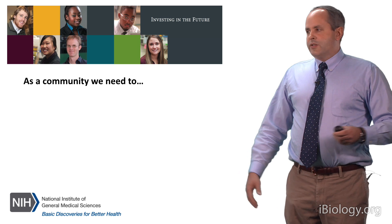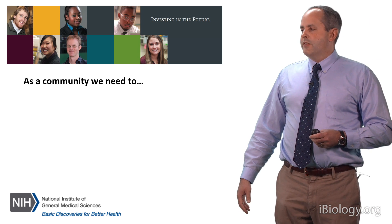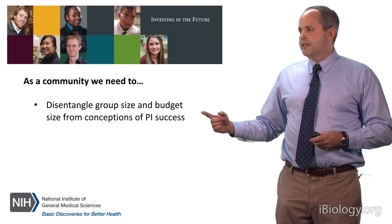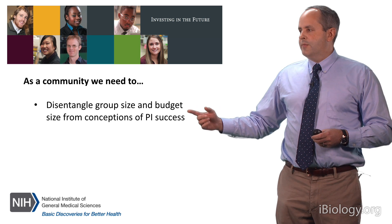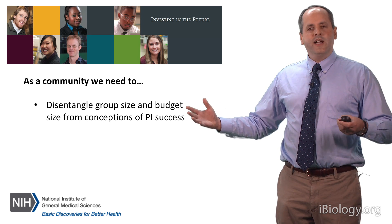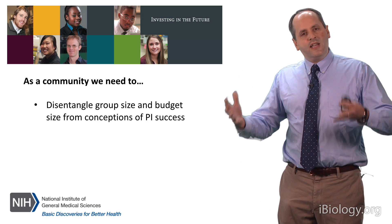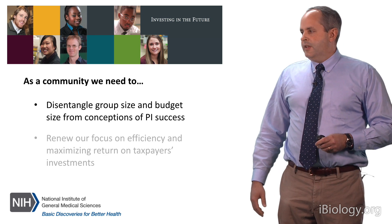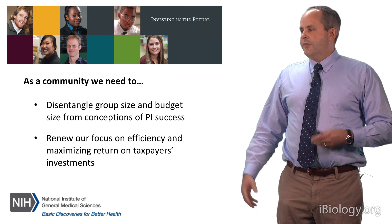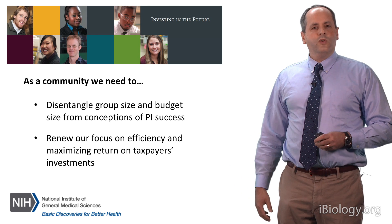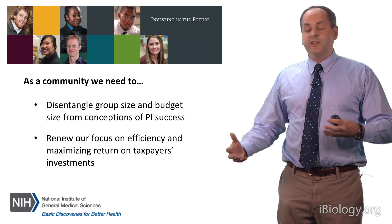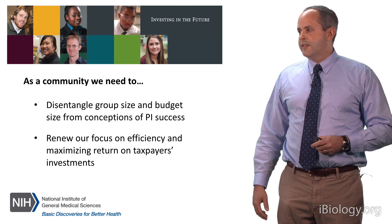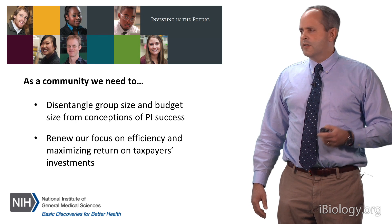So what can we do as a research community? There are a number of things I think we should think about. The first is to disentangle group size and budget size, that is number of grants, from conceptions that we have of PI success. We need to think about success as the science that's done, rather than how big your group is or how many grants you have. We also need to renew our focus on efficiency as one of the important goals of what we're doing in the system, in addition to productivity and impact, getting the taxpayers the most for their investments. I think that's really something critical that we need to devote ourselves to.